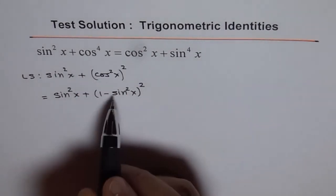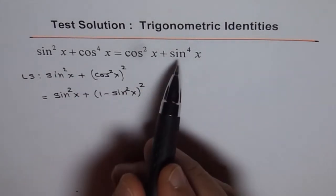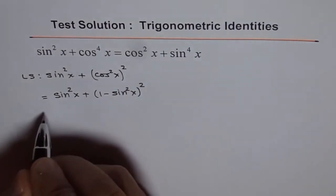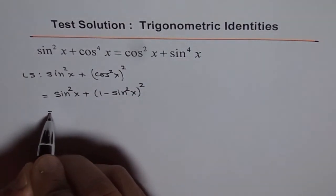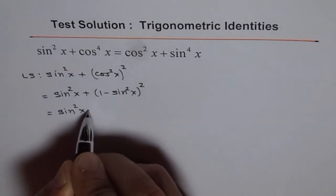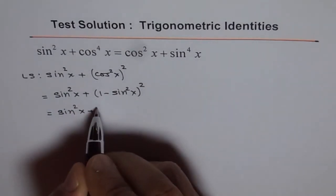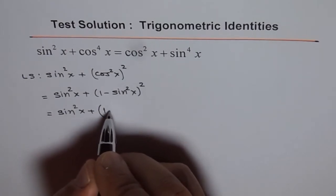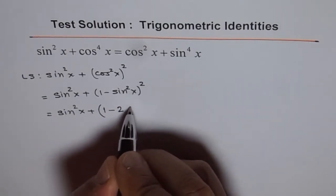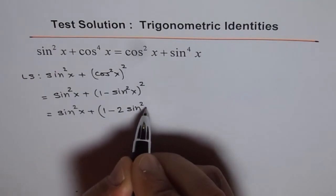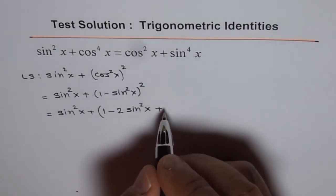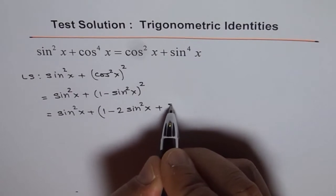We prefer to do this because we need sine to the power of 4x, and that will give us sine to the power of 4x. Now let's expand it. We get sine squared x plus — using a minus b whole square — 1 minus 2 sine squared x plus sine to the power of 4x.